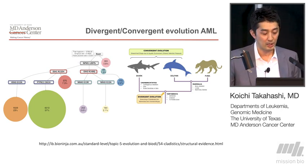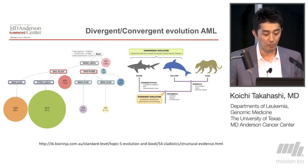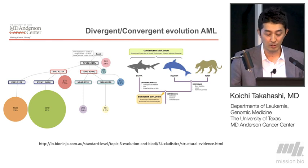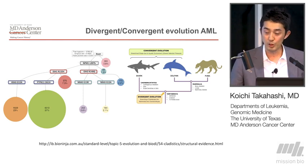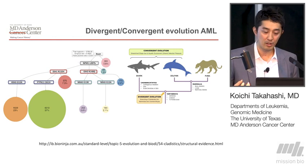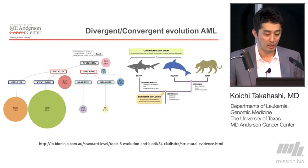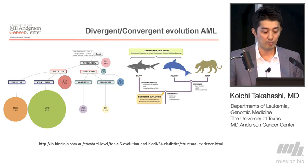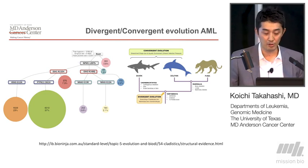So as a result, this tumor had six independent clones. But all these individual clones had some sort of shared functionality because they are combined with this NPM1 alteration, or IDH alteration plus RAS alteration.